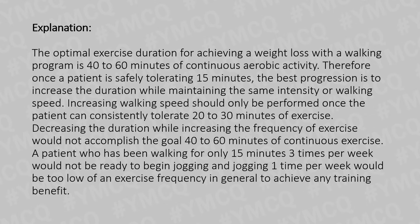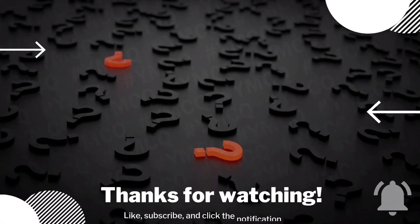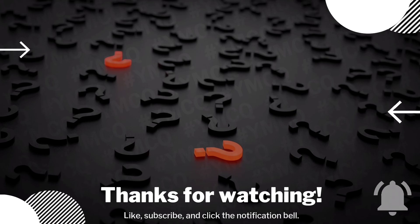Decreasing the duration while increasing the frequency of exercise would not accomplish the goal of 40 to 60 minutes of continuous exercise. A patient who has been walking for only 15 minutes three times per week would not be ready to begin jogging, and jogging one time per week would be too low an exercise frequency to achieve any training benefit. So that's all for today. If you need further clarification, check the description box and give your feedback in the comment box. If you like this MCQ session, do subscribe to this channel for more videos. Thank you.